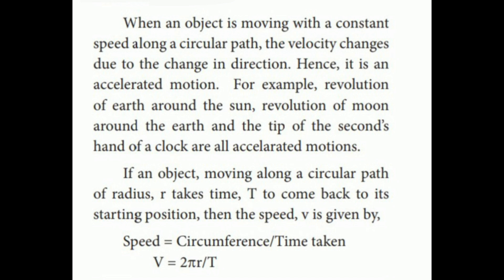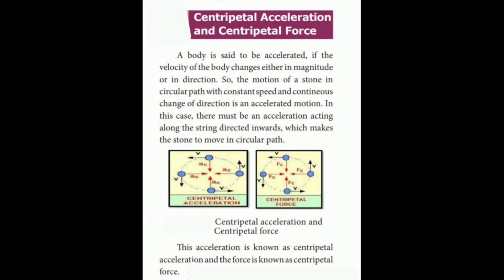If an object moving along a circular path of radius r takes time T to come back to its starting position, then the speed v is given by: speed = circumference / time taken, so v = 2πr / T.